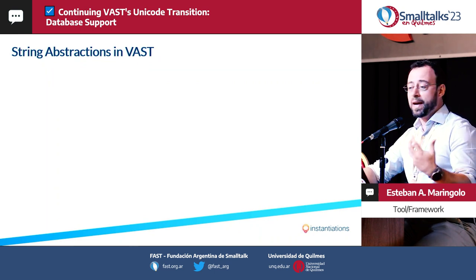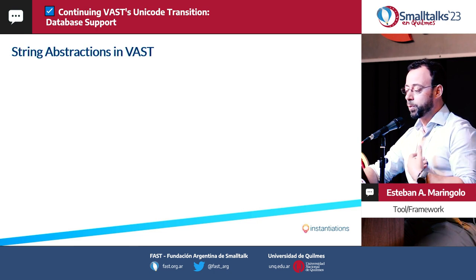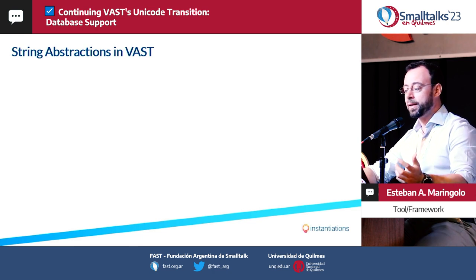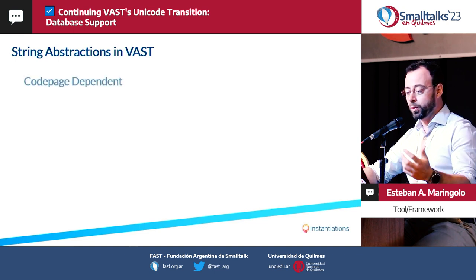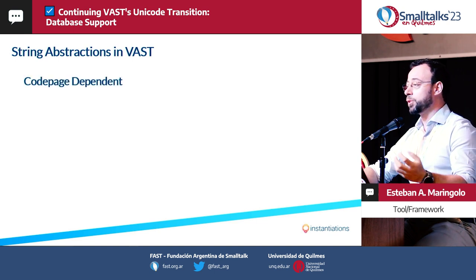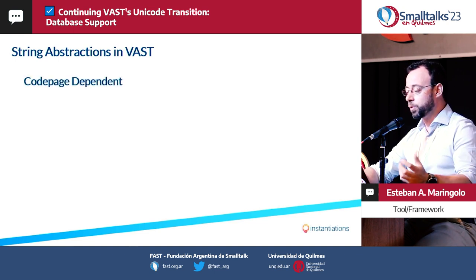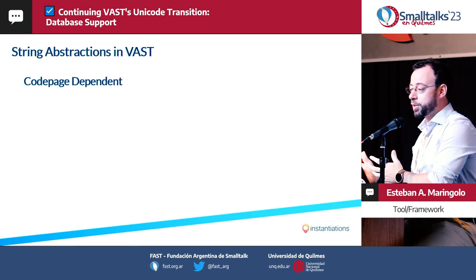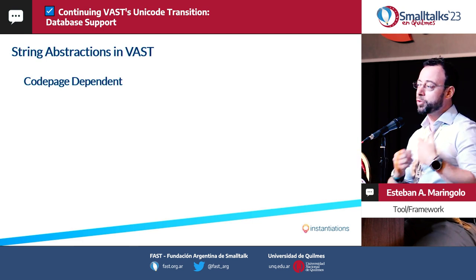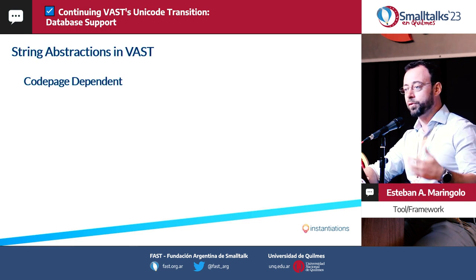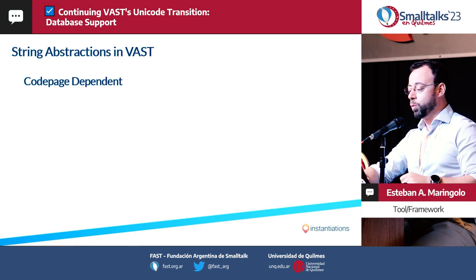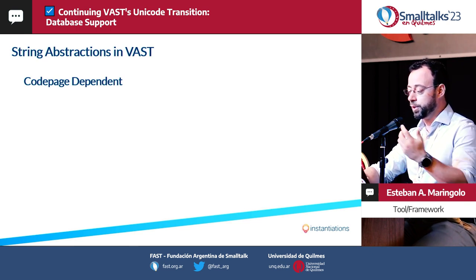Given VAST's long history, we've been dealing with code page dependent strings for a long time. With our support for Unicode, we removed the limitations associated with working with code pages and introduced new abstractions that simplify the use of Unicode while providing better ergonomics for the developers.